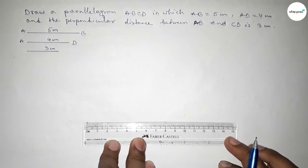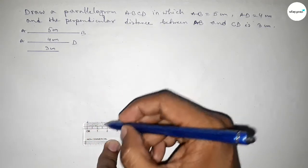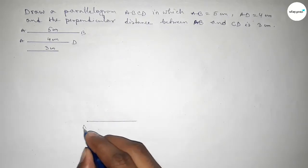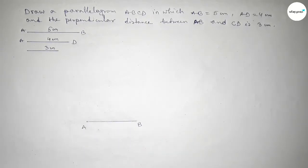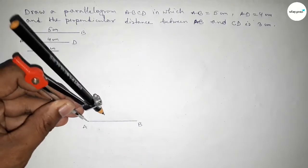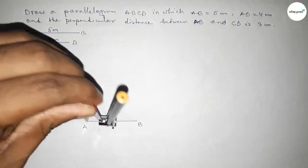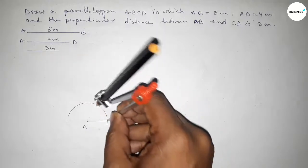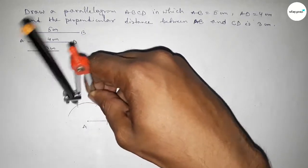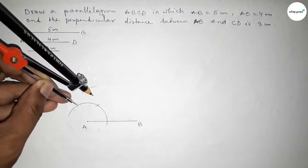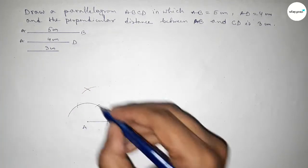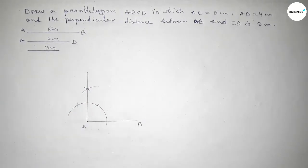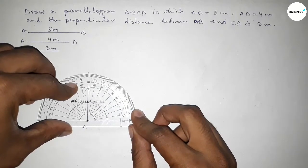First we draw a line of length 5 centimeter, taking point A and point B. Now we have to draw a 90 degree angle at point A. Putting the compass on point A and taking any length, drawing an arc. Then putting the compass with the same length, cutting arcs at multiple points, and drawing another arc with the same length so both curves intersect at a point. Joining this gives a 90 degree angle — checking this, it is perfectly 90 degrees.